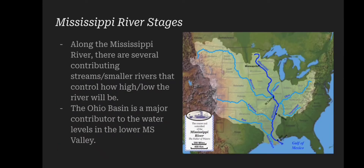Now let's talk about the Mississippi River stages specifically. As you can see on the right, this is the Mississippi River along with its several contributing streams or smaller rivers. These streams have control over how high or how low the river will be. One of those rivers is the Ohio River, which has the Ohio Basin, and it is a major contributor to the water levels in the lower Mississippi Valley.